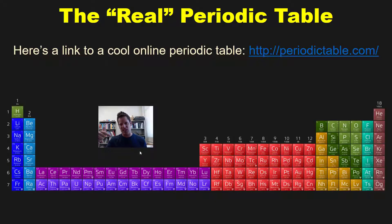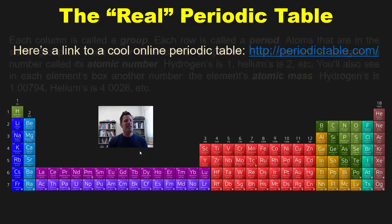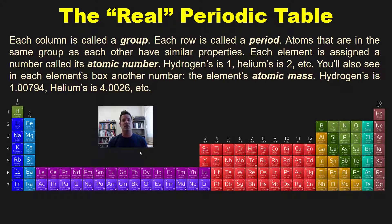Each column in the periodic table is called a group. Each row is called a period. Atoms that are in the same group or column as each other have similar properties. Each element is assigned a number called its atomic number. Hydrogen's atomic number - hydrogen is way over here, by the way - is 1. Helium, which is way over here, has an atomic number of 2, and so forth down the entire periodic table.